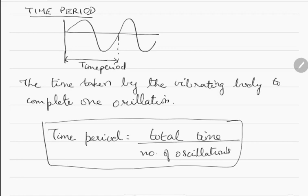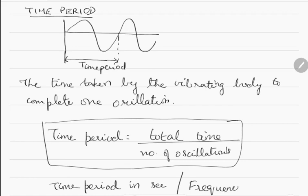The time period is usually measured in seconds, and frequency is measured in hertz. That is all about amplitude, frequency, and time period.